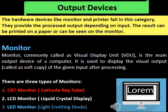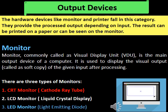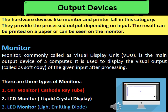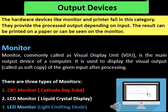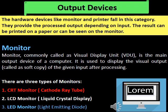Now we are going to learn about output devices. What are output devices? The hardware devices like monitor and printer fall in this category. They provide the processed output depending on input. The result can be printed on paper or can be seen on the monitor.